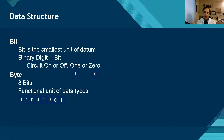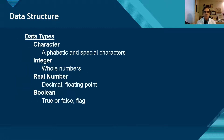Eight of those together make a byte, and you've probably heard of bytes before. And those are used to define the functional units of data types. So what are the data types? We can have characters, integers, real numbers, or Boolean — which is a flag that says true or false, or it's on or off.